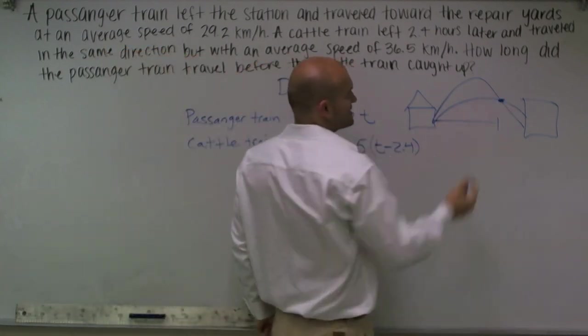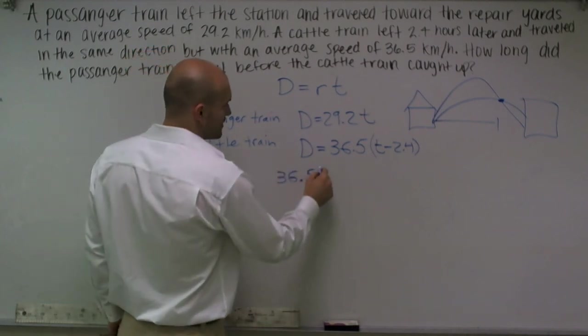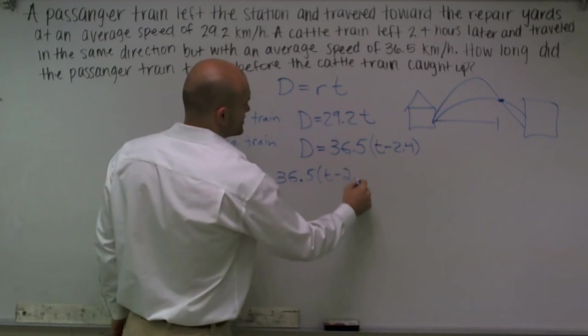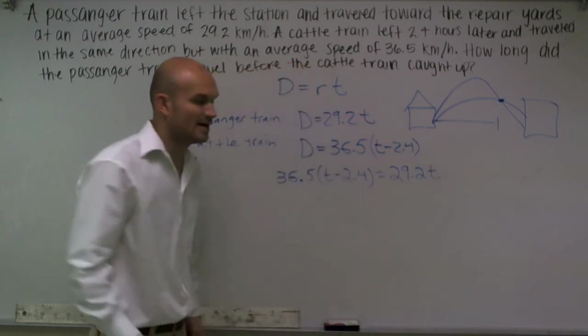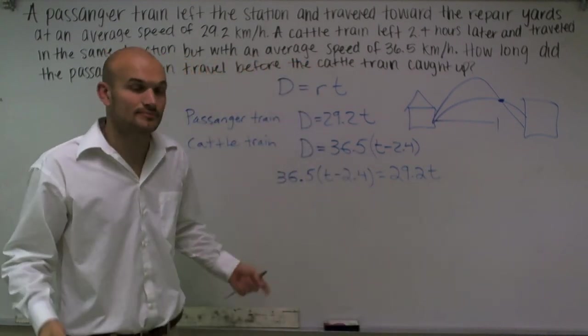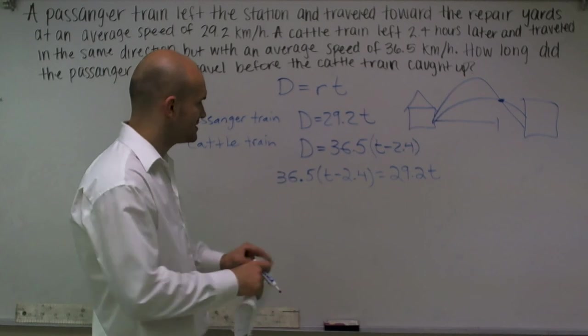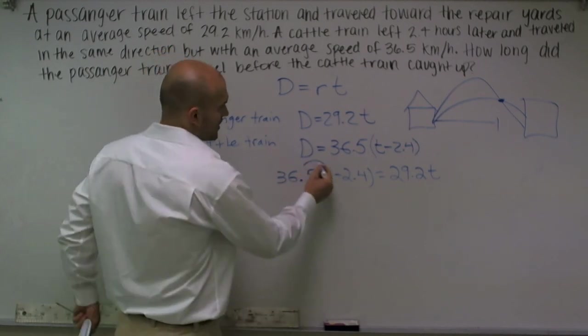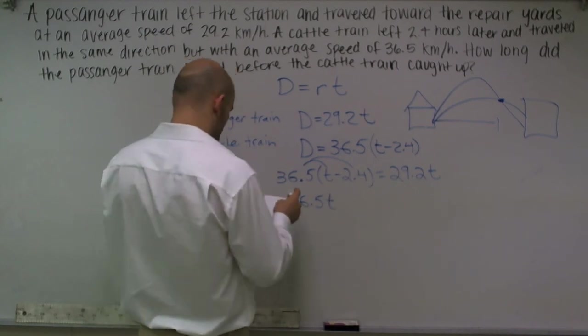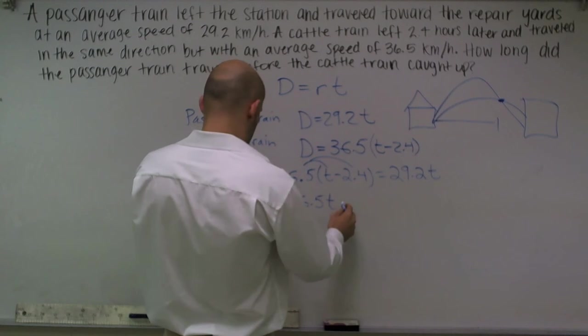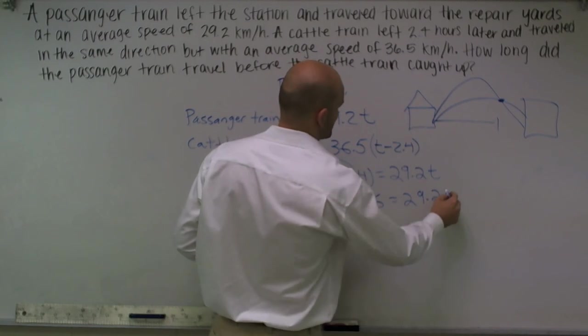And again, we do not know the distance or the time. However, there's one thing that's really important: when you have both these equations solved for D, and we also know that D, if you notice, where they cross that distance is going to be equal for both of them. So what I can do is I can set up my equation to say 36.5 times T minus 2.4 is equal to 29.2T. We know that distance that they traveled is equal.